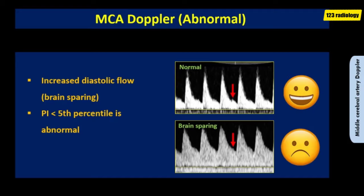In fetal growth restriction, there is preferential shunting of blood flow to the fetal brain, known as the brain-sparing effect. This leads to increased diastolic flow and hence a reduction in the pulsatility index of the middle cerebral artery. A pulsatility index below the 5th percentile for gestational age is abnormal.